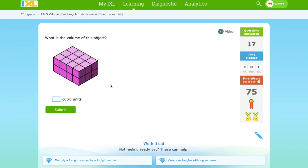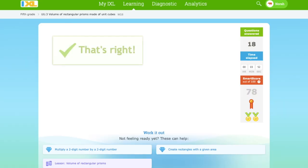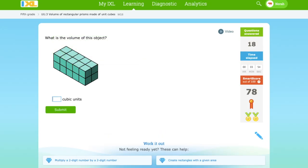If you want to do it another way, then you could just count this: 3, 6, 9, 12. And there's 2 layers, so 12 times 2 is 24 cubic units. So that's another way.